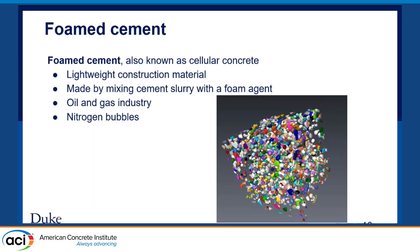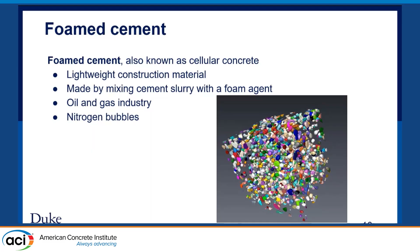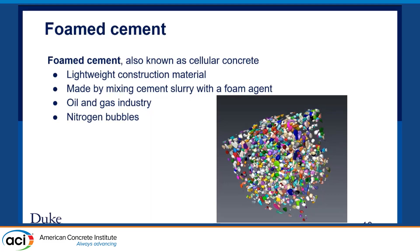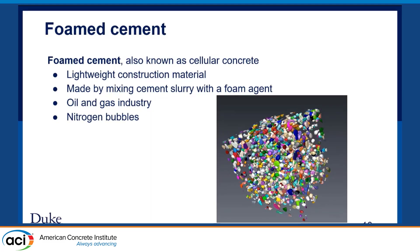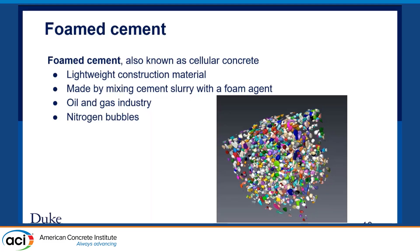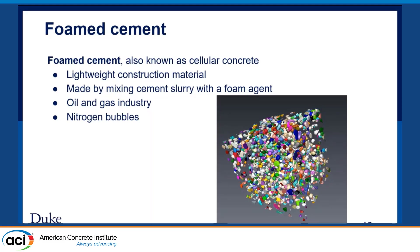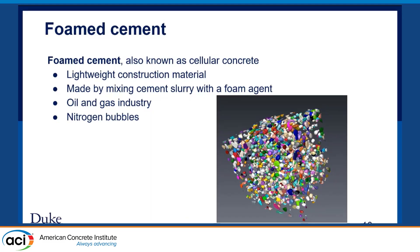We also talk about foam cement because it's a special concrete — it's lightweight and made by mixing cement slurry with a foam agent, commonly used in the oil and gas industry, and it's filled with nitrogen bubbles. The reason we include it in our dataset is that it is very highly porous, with large pores, so we can use it to evaluate whether our model has accurately picked out the pores.